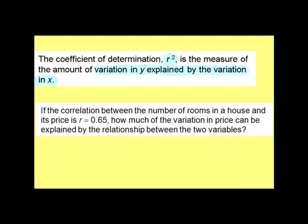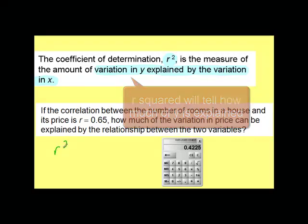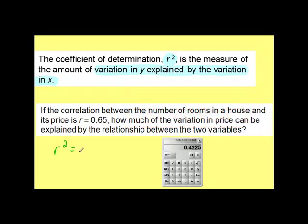So in this problem, if the correlation between the number of rooms in a house and its price is R equals .65, how much of the variation in price can be explained by the relationship between the two variables? Take your .65 for R and square it. To the nearest hundredth, I would say that R squared, the coefficient of determination, is .42.